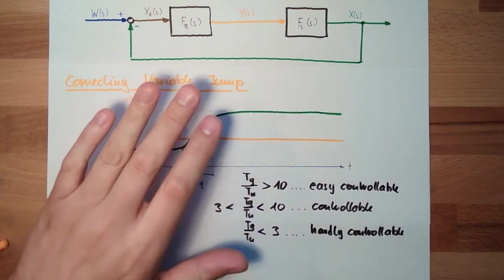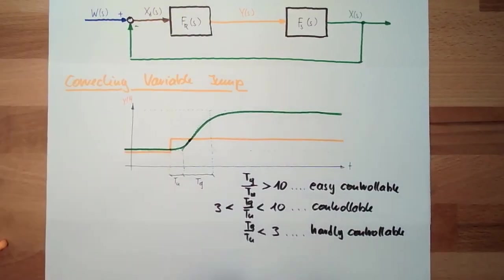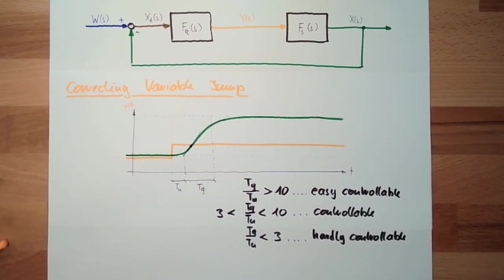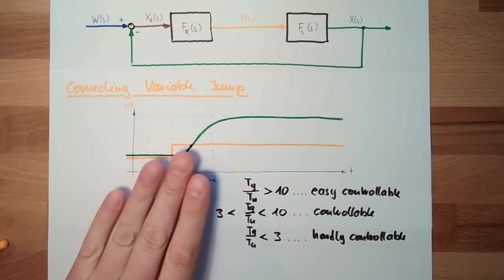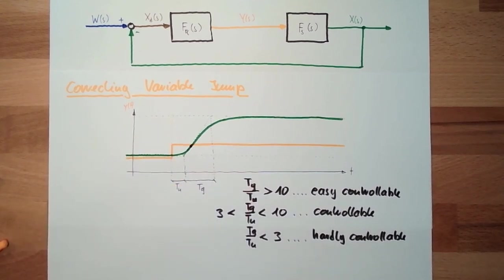Once we've done this correcting variable jump and we know we've adjusted this using the whole control loop, then we can do a setpoint jump, a reference variable jump. This will be our next video. What we can read out of a reference variable jump - we can read out some quality data. Here we analyzed the system. Next time we'll read out some quality data for our control loop. For this time, thank you very much for listening. Goodbye.